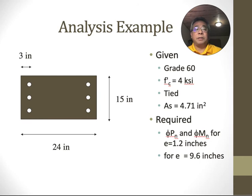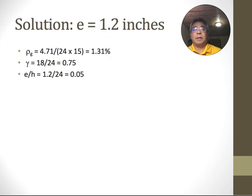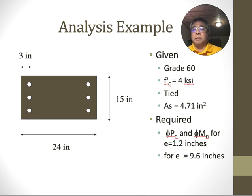Let's do the one with the small eccentricity first. We did this example previously. It has 1.3 percent steel over the gross area. Gamma is the distance between the steel divided by the overall distance. The column is 24 inches wide, there's three inches on both sides, so gamma is a ratio of 18 to 24.